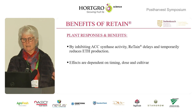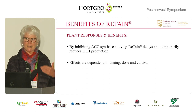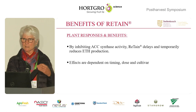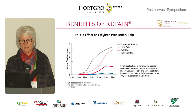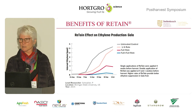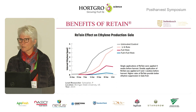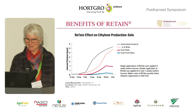Because we inhibit the activity of ACC synthase, we reduce ethylene production, but to what extent depends on the timing, the dose applied, and the specific cultivar. Using Gala as an example: the top line is the untreated control showing the increase in ethylene production towards harvest. A quarter rate gives a moderate reduction, the full rate gives a much greater reduction, and applying twice gives an even better response, though that may be a costly option.